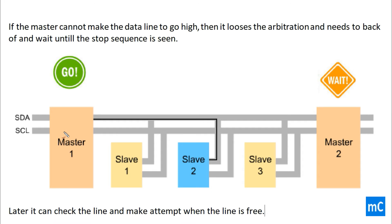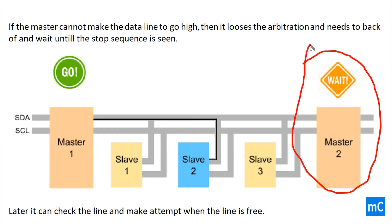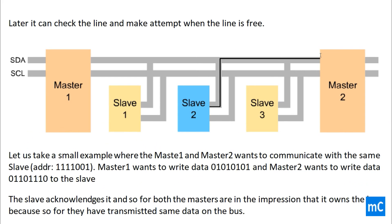If Master 2 cannot make the data line go high, then it loses the arbitration and needs to back off and wait until the stop sequence is seen. This is the wait condition. Later, it can check and make another attempt when the line is free, and access the bus once Master 1 has released it.